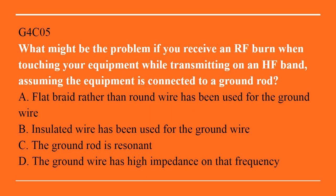G4C05: What might be the problem if you receive an RF burn when touching your equipment while transmitting on an HF band, assuming the equipment is connected to a ground rod? A. Flat braid rather than round wire has been used for the ground wire. B. Insulated wire has been used for the ground wire. C. The ground rod is resonant. Or D. The ground wire has high impedance on that frequency.